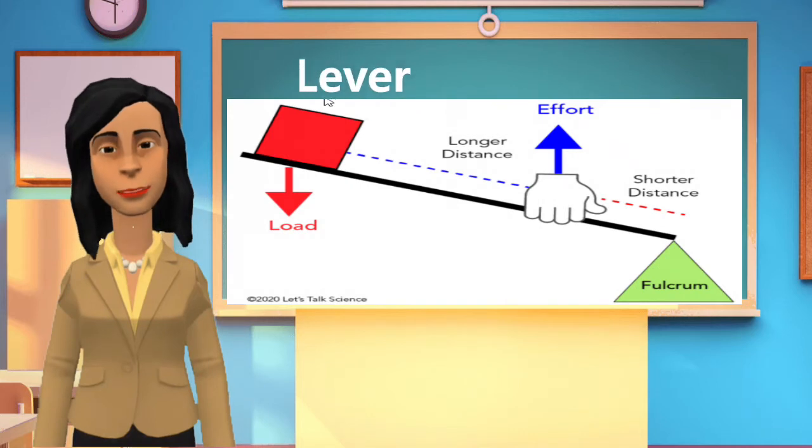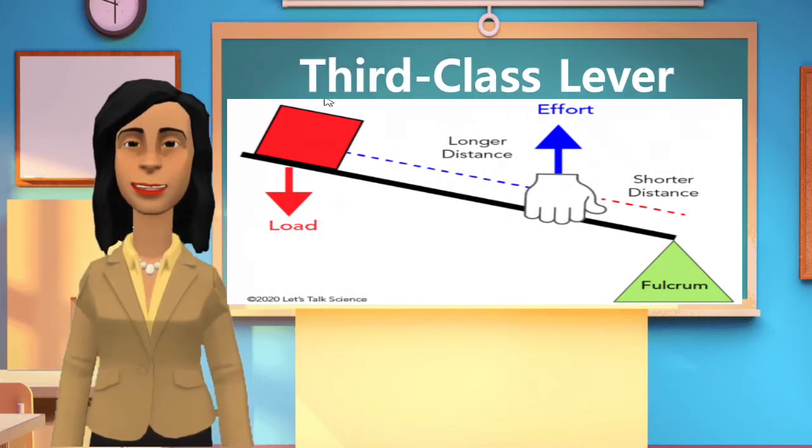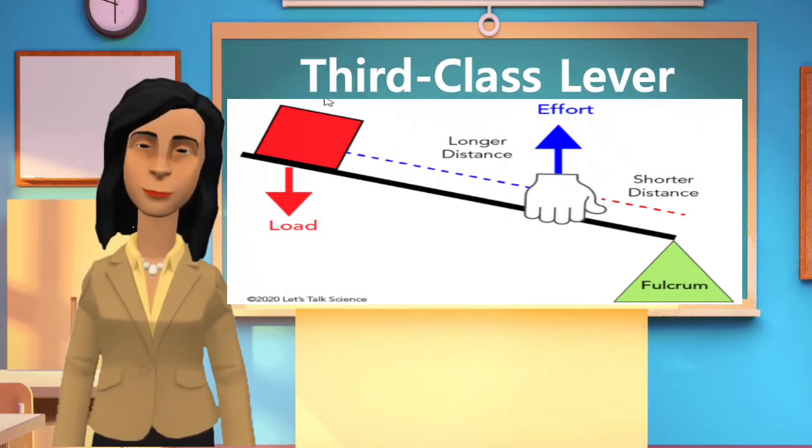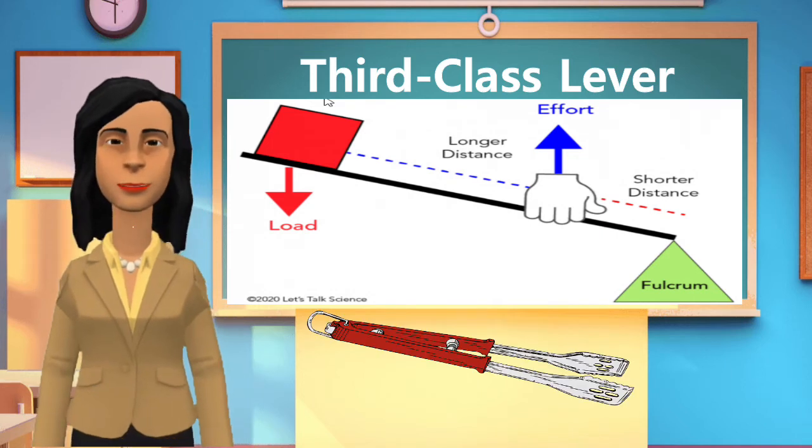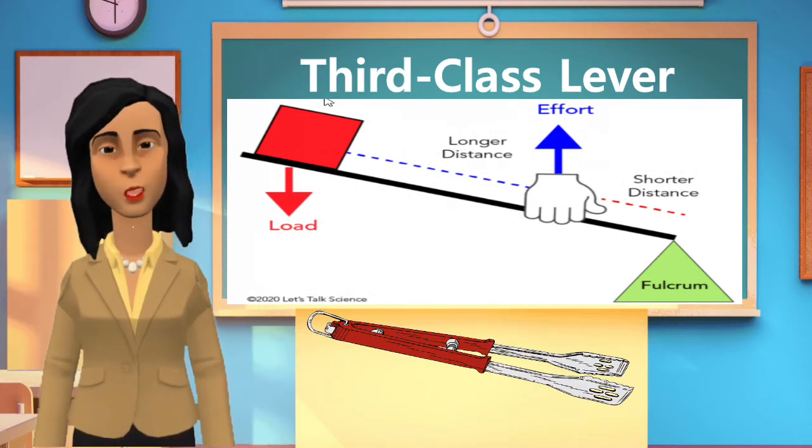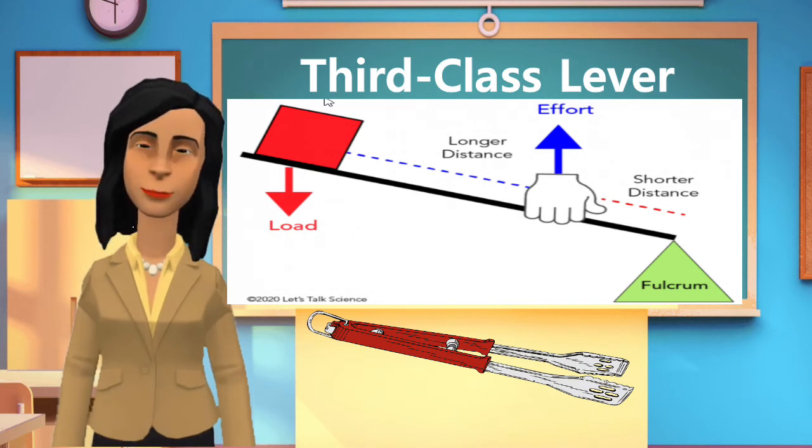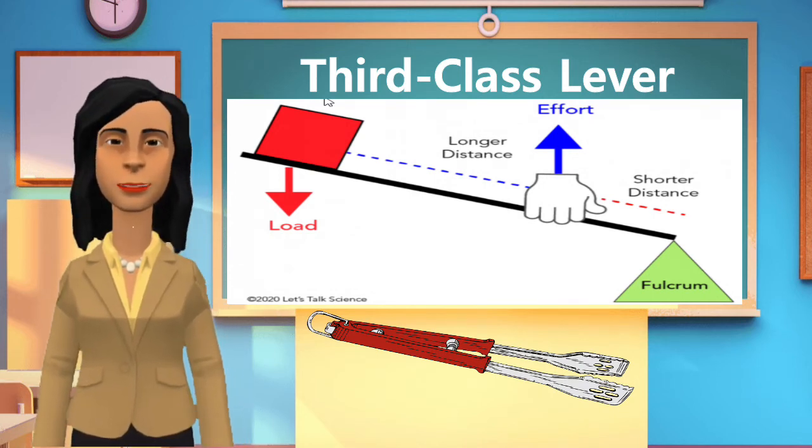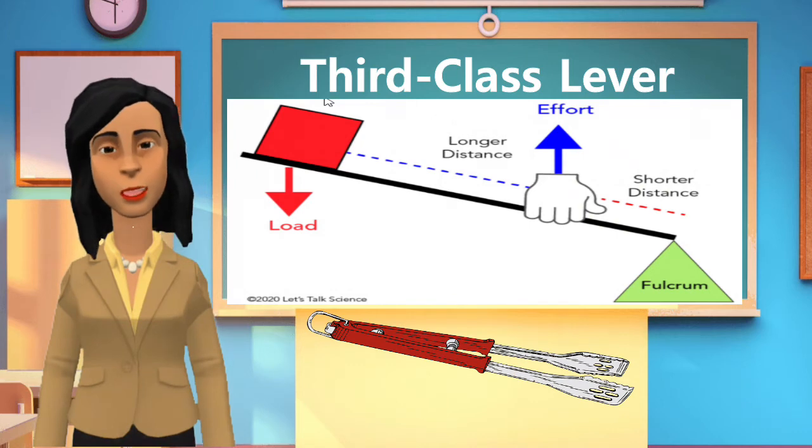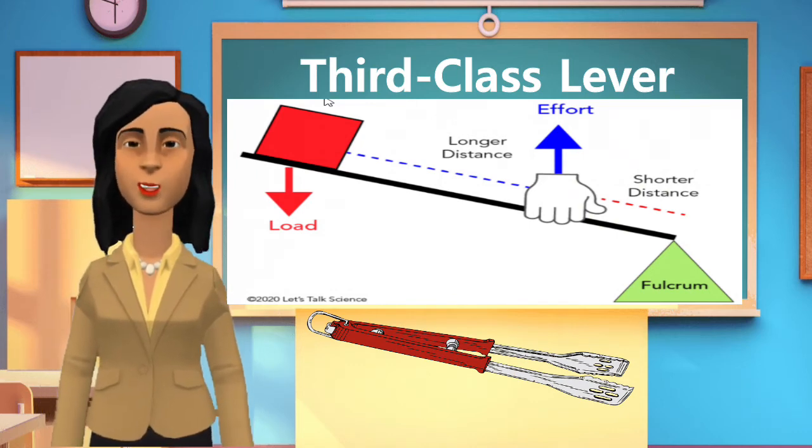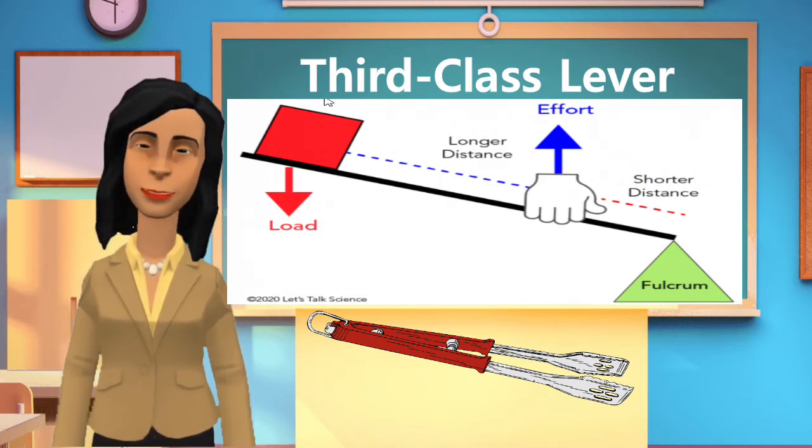Third class lever is a lever with the effort between the fulcrum and the load. The tongs you use in your activity is an example of this lever. The charcoal, which is at the end, is the load. The part which you hold is the effort, and the fulcrum is at the other end.